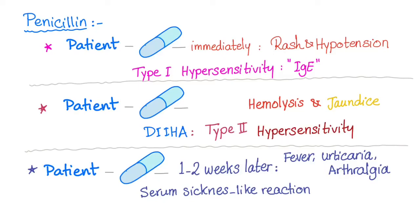There are three different scenarios for penicillin. First, a patient takes penicillin and immediately develops rash and hypotension. What's that? This is a type 1 hypersensitivity reaction — IgE-mediated, involving mast cell or basophil activation and release of histamine.